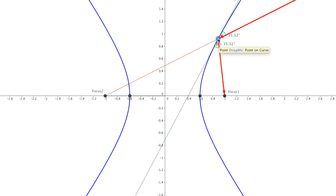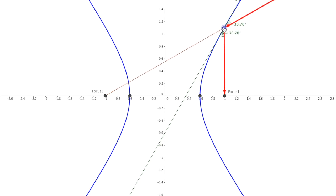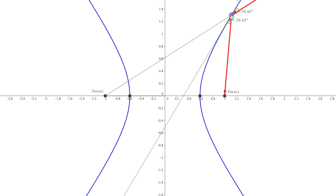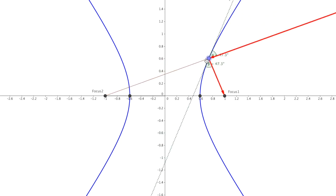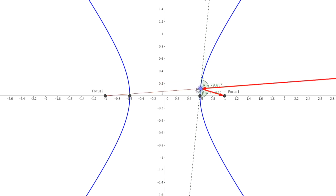So no matter where this point is, the angle of incidence and the angle of reflection or refraction is exactly the same. So as I move this around, those angles stay exactly the same, even when we get down to right here.